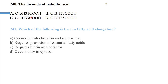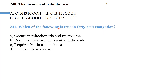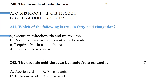Which of the following is true in fatty acid elongation? Fatty acid elongation occurs in the mitochondria and microsomes. The organic acid that can be made from ethanol is acetic acid.